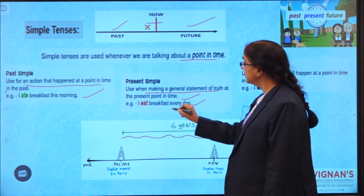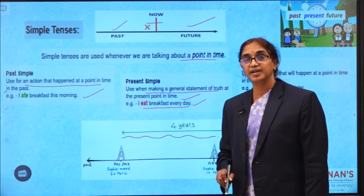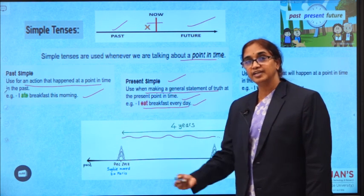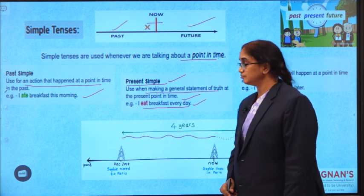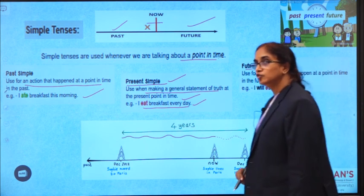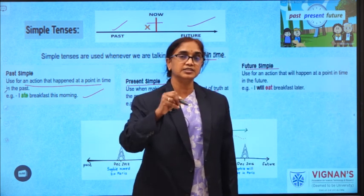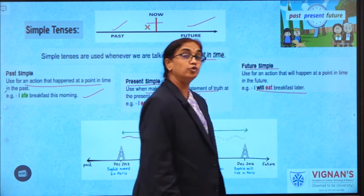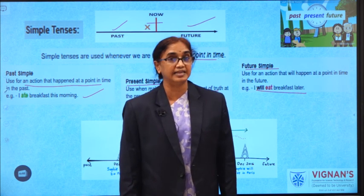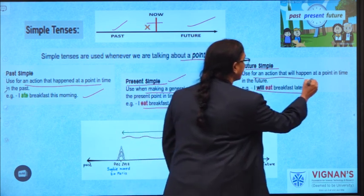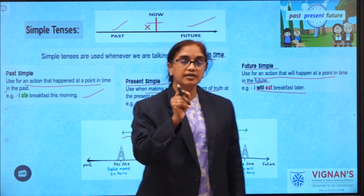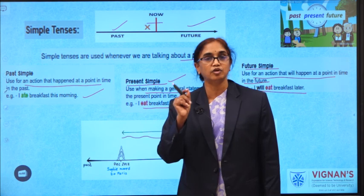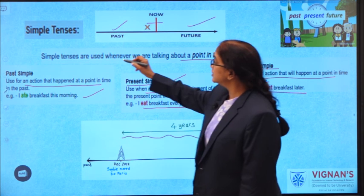These are statements which talk about recurring actions, regular actions, and general statements about regular routines — so we mention them in simple present tense. For future simple, when we are talking about an action that is going to take place at a point in the future, for example: I will eat breakfast later — I usually have my breakfast at 8 a.m. but today I will eat at 9 a.m. The key word is point of time. Simple tenses are used when you are referring to a particular point of time.